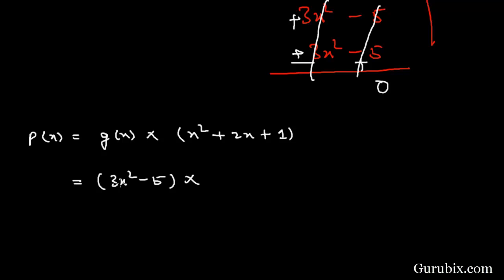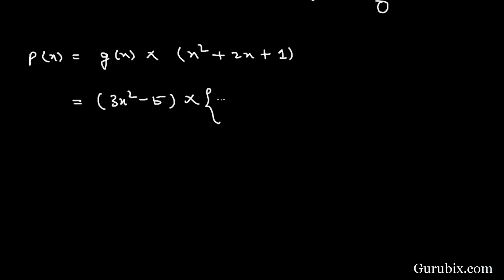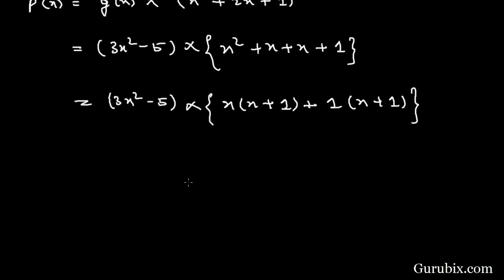We know the factors of 3x² - 5 from the given zeros. Now we factorize the quotient x² + 2x + 1 by splitting the middle term: x² + x + x + 1 = x(x + 1) + 1(x + 1) = (x + 1)(x + 1). So P(x) = (3x² - 5)(x + 1)(x + 1).